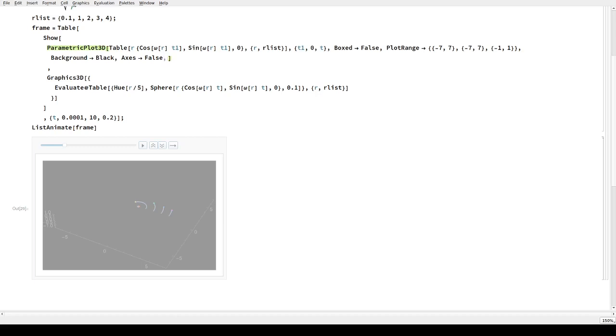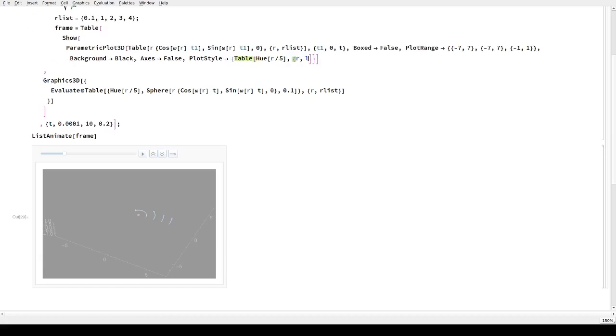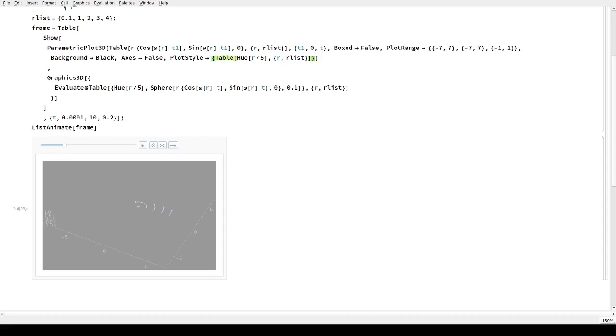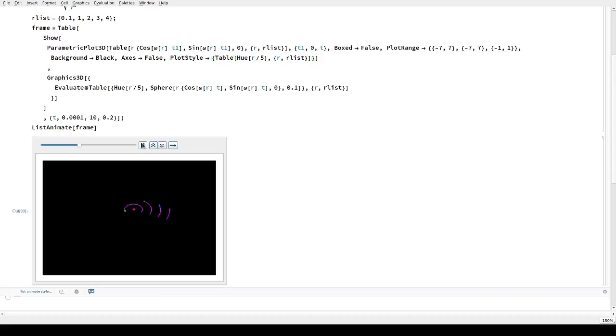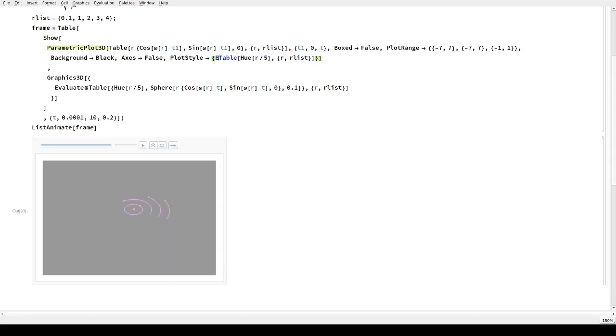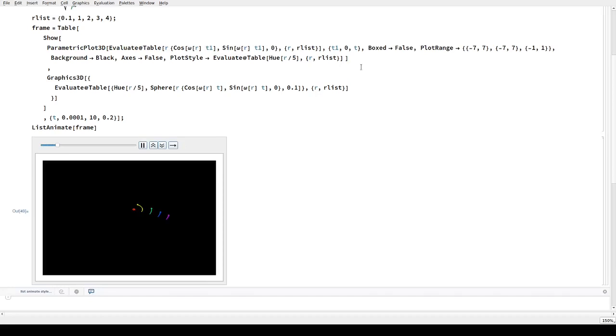Then more complicated is to generate the colors that we want. The function that defines how I'm going to plot each of these curves is called plot style. It's supposed to be a list. So what we need is again a table that tells us what is going to be the color. Let's have the same colors as the sphere, so hue of r over five, r over all the r list. It's generating this table at the wrong time, so we want to evaluate this at the beginning. Much better. Now each planet has its own nice trajectory going with it.